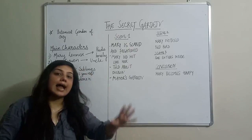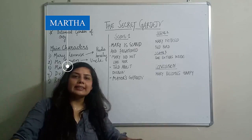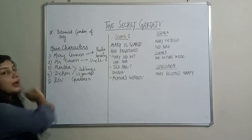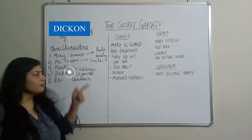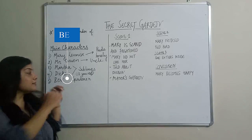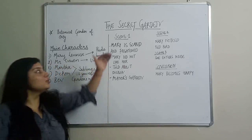So the first two characters are the girl Mary, who is an orphan whose parents have died, and Mr. Craven, her uncle. Next is Martha — she is a caretaker working in Mr. Craven's house and is responsible for taking care of Mary. Next is Dickon, who is the brother of Martha. Last is the gardener of the secret garden. The word 'secret' means it was not visible to all — it was a secret.